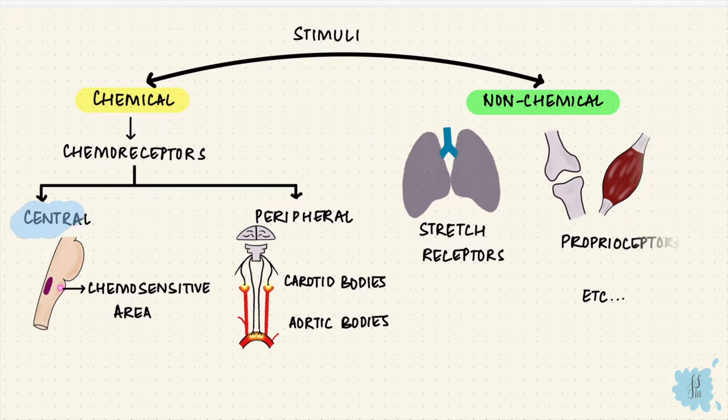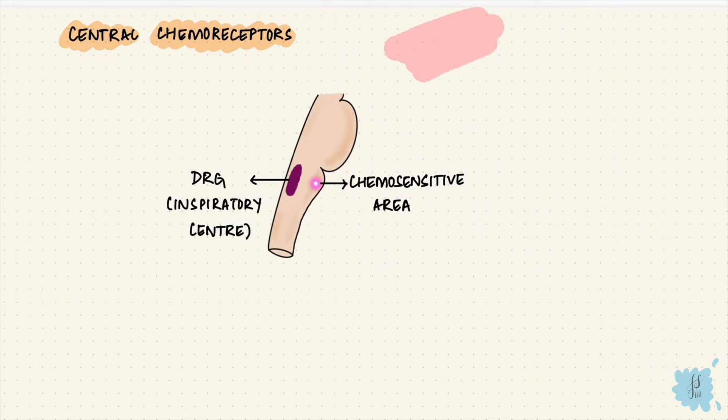First we're going to look at the central chemoreceptors, that chemosensitive area on the ventral medulla, right near the inspiratory center. The ultimate goal of this respiratory regulation is to maintain a constant blood oxygen, carbon dioxide, and hydrogen ion concentration.